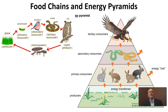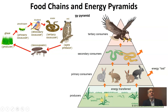Anytime we look at energy in an ecosystem, we need to think about a food chain. Energy enters from the sun and is collected via photosynthesis by producers — here we have grass. An herbivore like a grasshopper eats the grass, passing that energy along. The grasshopper is eaten by a bluebird, and if the bluebird is eaten by a snake, that energy keeps getting passed. Energy moves from organism to organism, always starting with a producer, because all energy inside an ecosystem comes from the sun.